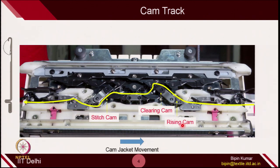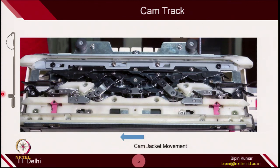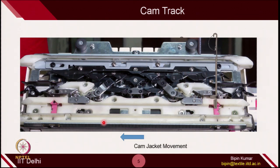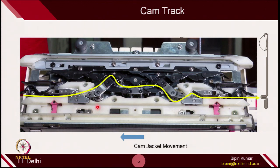These are the locations of rising cam, clearing cam, and stitch cam. But when you reverse the cam jacket movement from right to left, the needle comes from the left side relative to the cam jacket. The stitch cam now plays the role of clearing cam from the previous direction. Depending on which direction the carrier is moving, the nature of these cams will change — it may act like a clearing cam or a stitching cam.